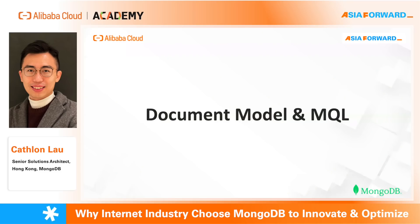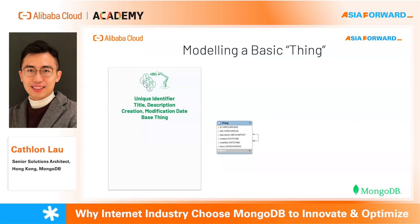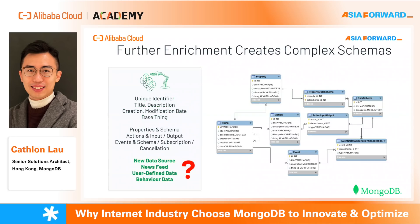Let's start with the Document Data Model and MQL. When we do data modeling in a traditional way with RDBMS, most likely you will have an ERD or a class diagram to describe a thing. We start with a table of things including ID, descriptions, title, and submit data. It's quite simple, but if you want to enhance your data, you need to add more tables to describe things — like properties, schema, actions, input and output, and some events.